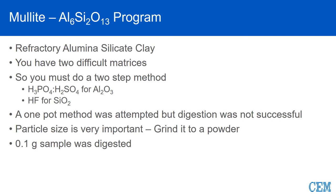Mullite is a really interesting material — a combination of aluminum and silicate oxide, called a refractory aluminum silicate clay. You have to do a two-step method: take the aluminum portion in with phosphoric/sulfuric acid, then come back and add HF for the silicon dioxide. We tried a one-pot method — adding both acids together — and what you get is mud. It just never comes clear. Particle size is important, so grind it down to a powder.